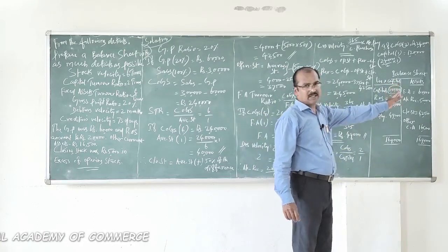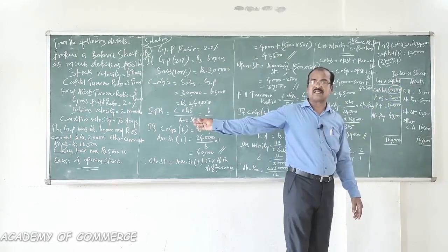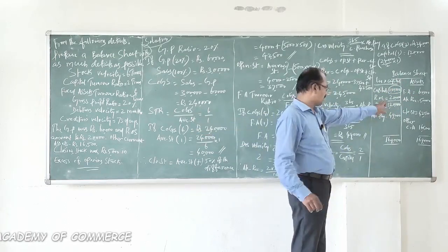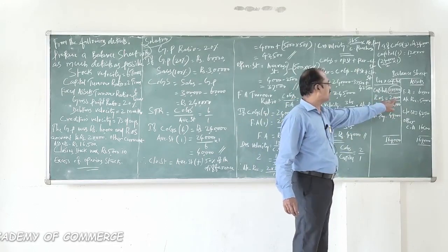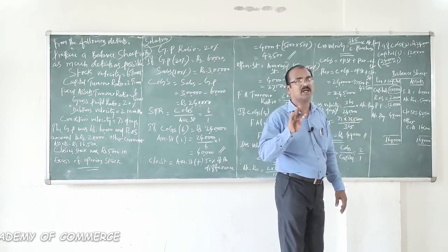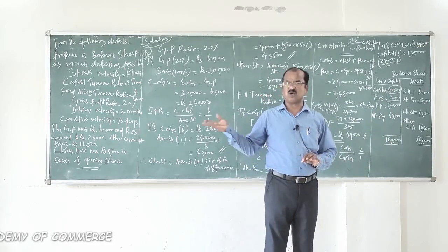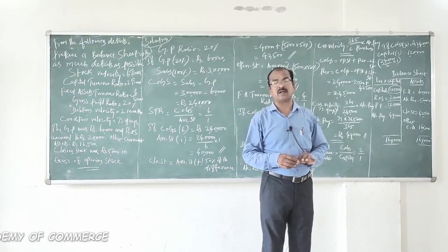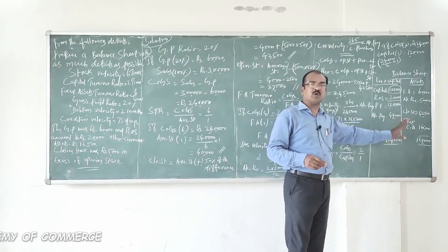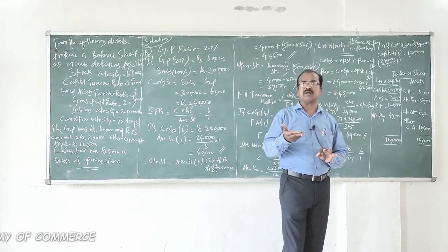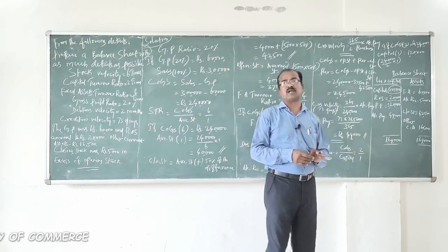Now let's look at the balance sheet prepared. Liabilities side: Proprietary fund = 1,20,000, of which Reserves and Surplus = 20,000, so Share Capital = 1,00,000. There is no long-term liability. The only current liability is Accounts Payable = 49,000. No other liability items are available from the given information.